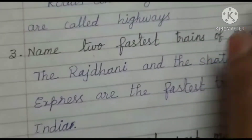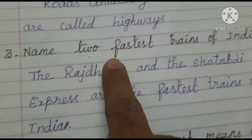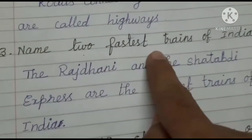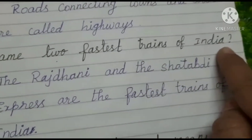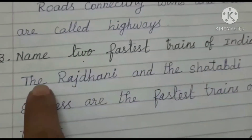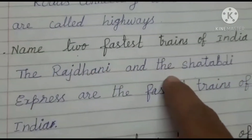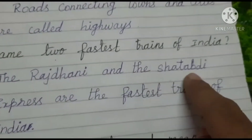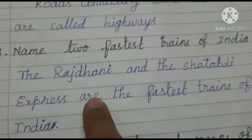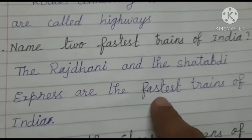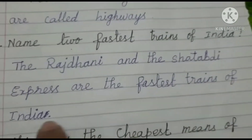3rd one: Name two fastest trains of India. The Rajdhani and Shatabdi Express are the fastest trains of India.